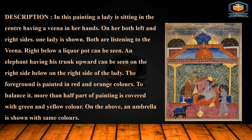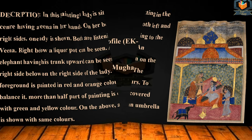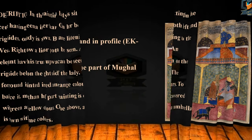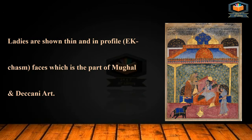The upper half of the painting is covered in green and yellow color. The ladies are shown thin and in profile — one face shown with one eye visible — which is a characteristic part of Mughal and Decani art.